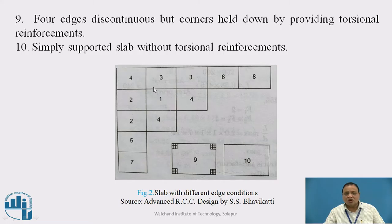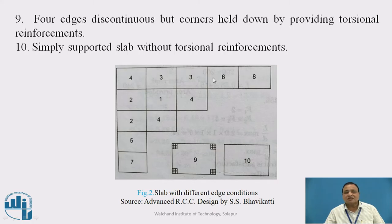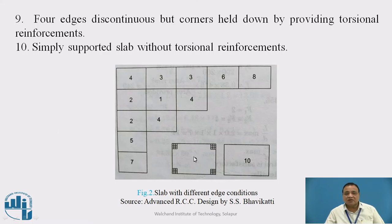All these cases are shown in figure 2. Case 1: all sides continuous. Case 2: one short edge discontinuous. Case 3: one long edge discontinuous. Case 4: two adjacent edges discontinuous. Case 5: two long edges discontinuous. Case 6: two short edges discontinuous. Case 7: three edges discontinuous, one long edge continuous. Case 8: three edges discontinuous, one short edge continuous. Case 9: all four edges discontinuous, with torsional reinforcement at corners. Case 10: simply supported slab without torsional reinforcement.